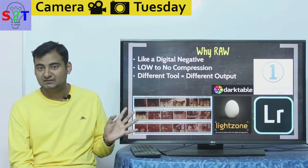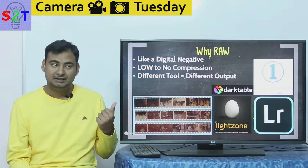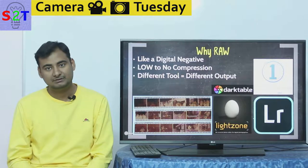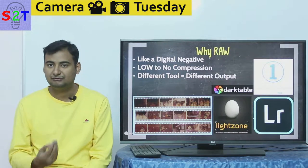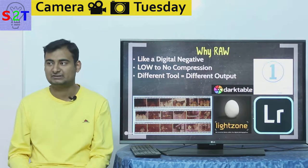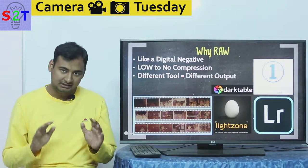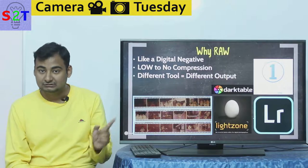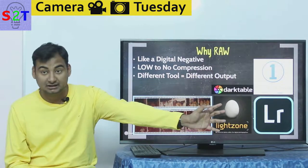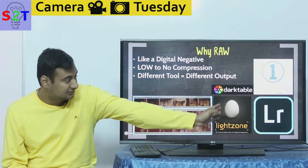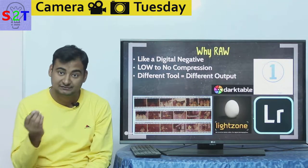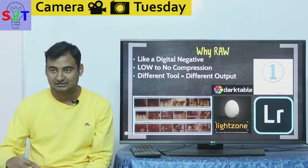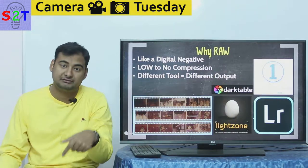Think of it like this: if you had multiple studios developing the same film roll, the colors from each would be completely different — different hue, different saturation — because the developing process varies. The same happens with RAW. If you take the same RAW file and open it in different software — Adobe Lightroom, Capture One Pro, or darktable — each one will give you a different output. RAW is just flat data, and each of these software tools acts like a different developing process for your RAW file.